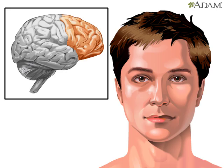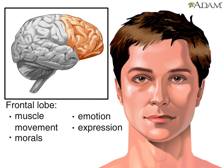Voluntary body movements are controlled by a region of the frontal lobe. The frontal lobe is also where we shape emotional reactions and expressions.